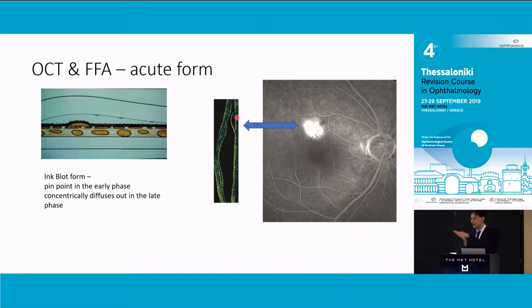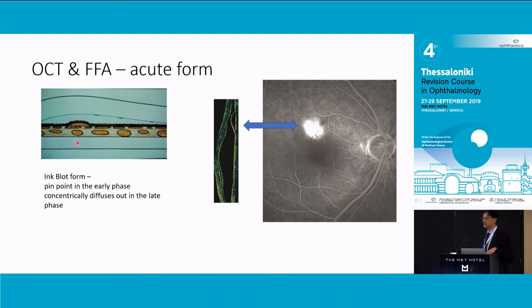It's often incredibly shallow - the separation between the RPE and Bruch's membrane. This is Don Gass's drawing, pre-OCT.